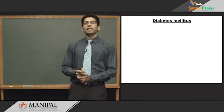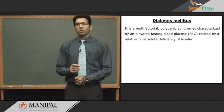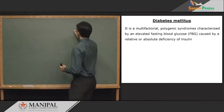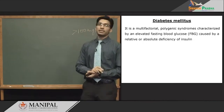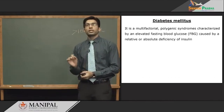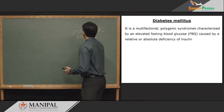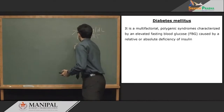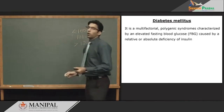First, let's see what diabetes mellitus is. It is a multifactorial polygenic syndrome characterized by elevated fasting blood glucose level. According to the American Diabetes Association, less than 100 mg/dL is normal. If fasting blood glucose is between 101 and 125 mg/dL, it is called impaired glucose tolerance. When it exceeds 126 mg/dL, it is called diabetes.